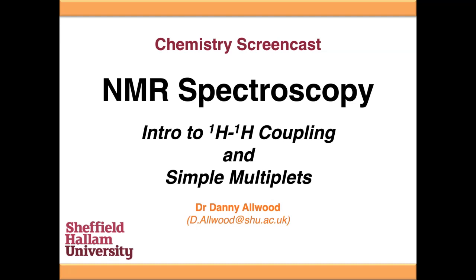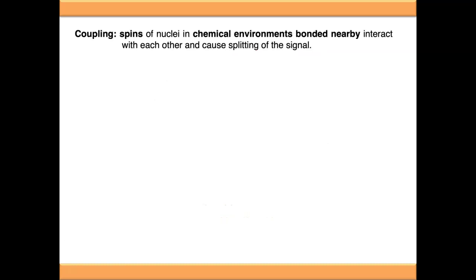This video is going to introduce coupling in proton NMR spectra, where it comes from and how to interpret simple multiplets. Fundamentally, coupling is what happens when spins of nuclei which are bonded close to each other in different chemical environments interact with each other, and it splits the signal.